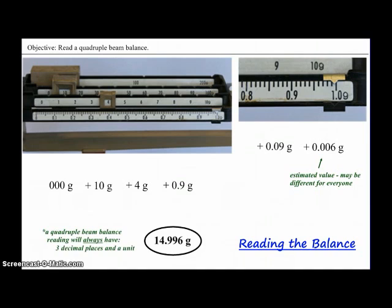Remember, a quadruple beam balance reading will always have 3 decimal places and a unit of grams. Even if the last number is a 0, you have to write the 0 down. You always need to have 3 decimal places in your reading.